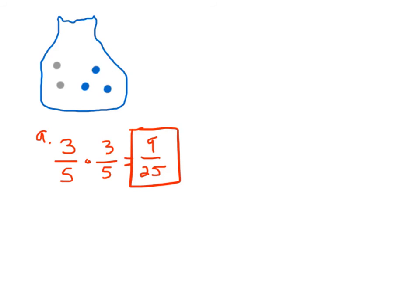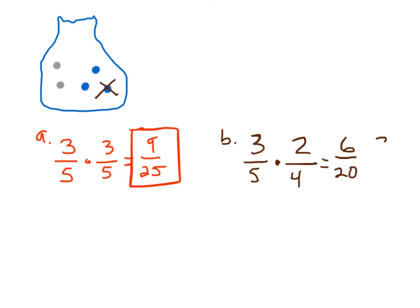Without replacement means once you pull it out, you can't put it back in, and it's going to change the problem. The first pull, the probability of pulling a blue is still three-fifths. But let's say we pull that blue one out — now what is the probability of pulling out a blue one? That's going to be two-fourths. We multiply and get six-twentieths, which reduces to three-tenths. So the probability of getting two blues without replacement is three-tenths.